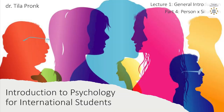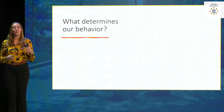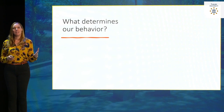This is Part 4 of Lecture 1. In this final part of the lecture we're going to talk about the core concept of social psychology. By now I think you understand what social psychology wants to know — we want to know why people do what they do, so we want to understand human behavior.